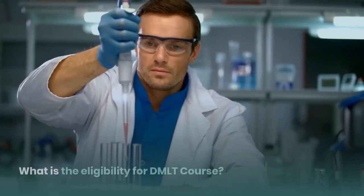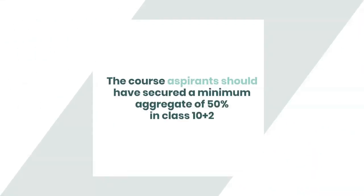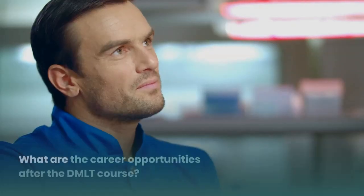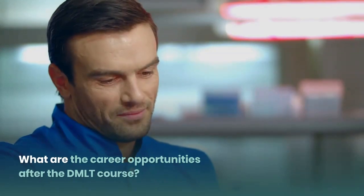What is the eligibility for the DMLT course? The course aspirants should have secured a minimum aggregate of 50% in class 10+2, in the science stream with biology, physics, and chemistry as the main subjects from a recognized board or university.